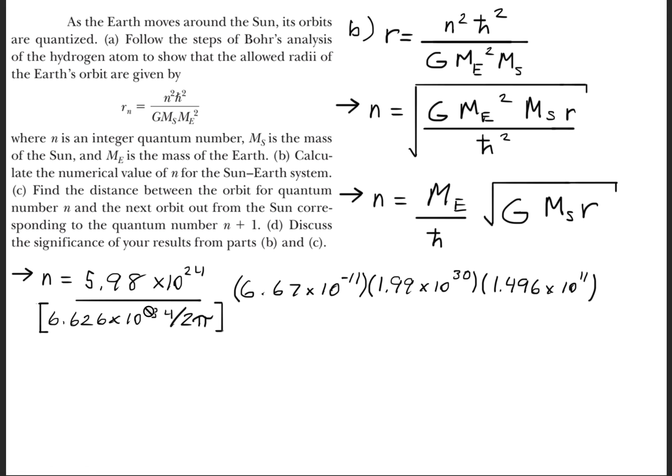The mass of the Earth is 5.98 times 10^24 kilograms. h-bar is Planck's constant, 6.626 times 10^-34 joule seconds divided by 2π.